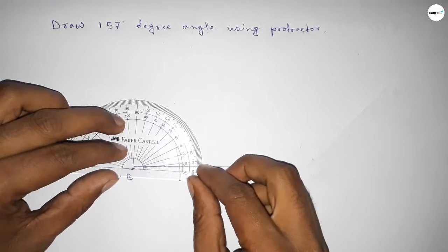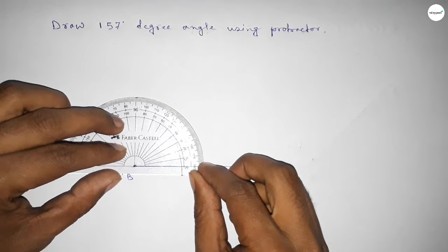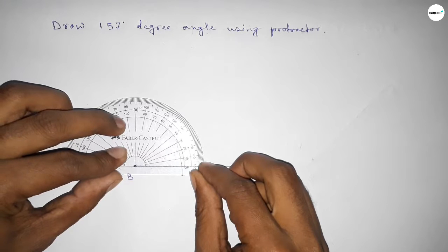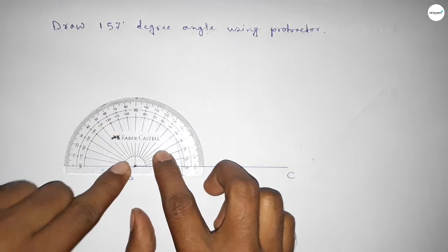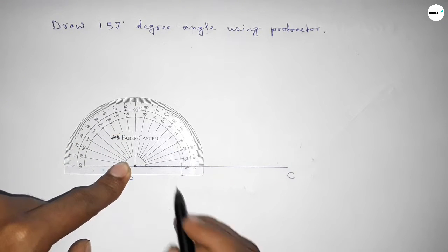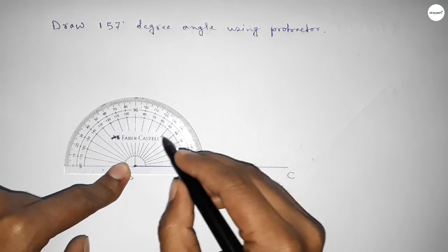Place the protractor on point B perfectly. Then count the angles - this is the starting angle: 0, 10, 20, 30, 40...